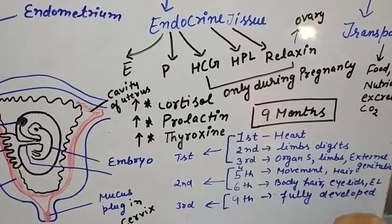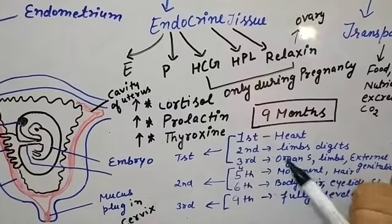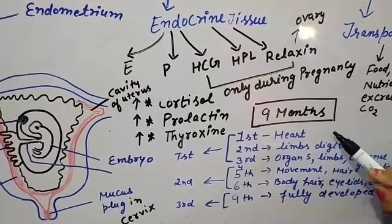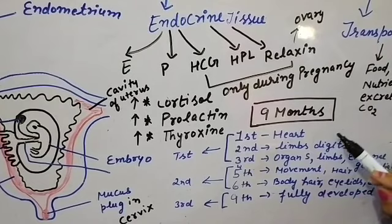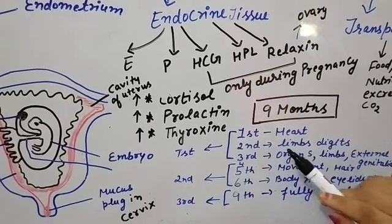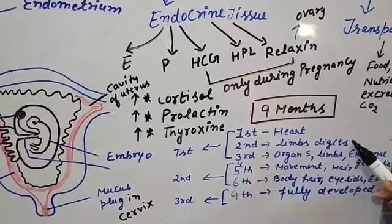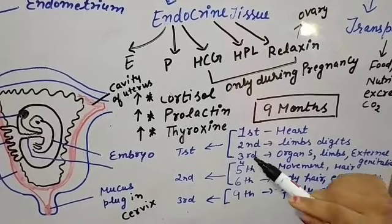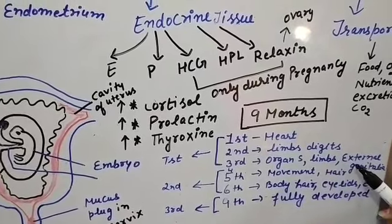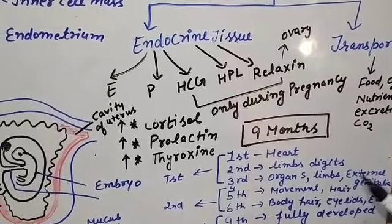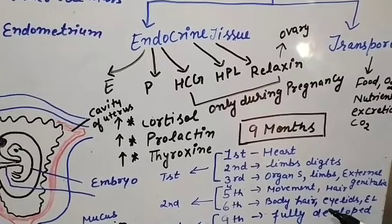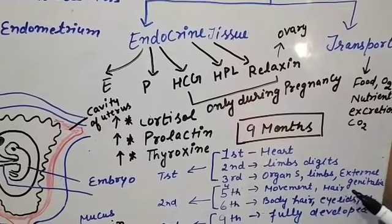In the first month of pregnancy, the heart sound can be heard with a stethoscope. By the end of the second month, the fetus develops limbs and digits. By the end of 12 weeks (end of the first trimester), most major organs are formed, including limbs, external genitalia, and other organs. The first movement of the fetus and the appearance of hair on the head are observed during the 5th month of pregnancy.